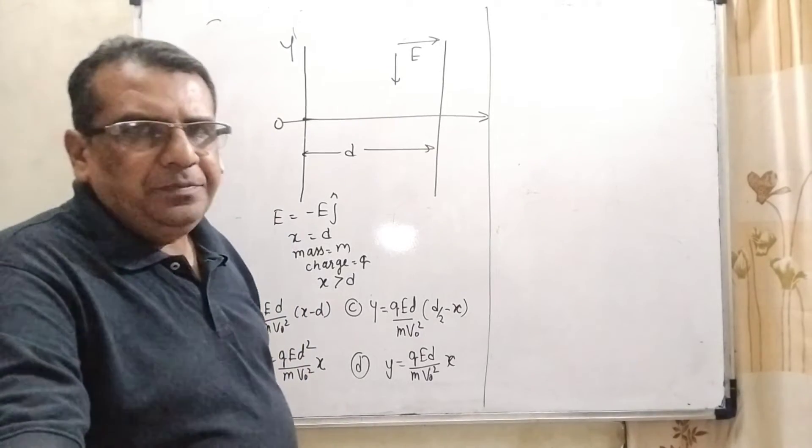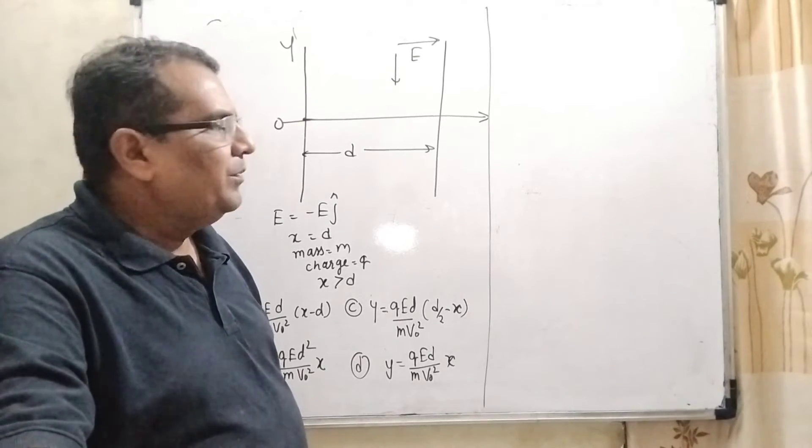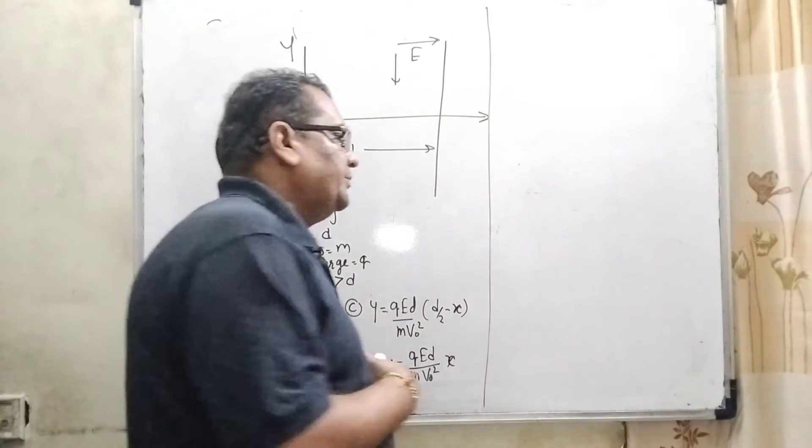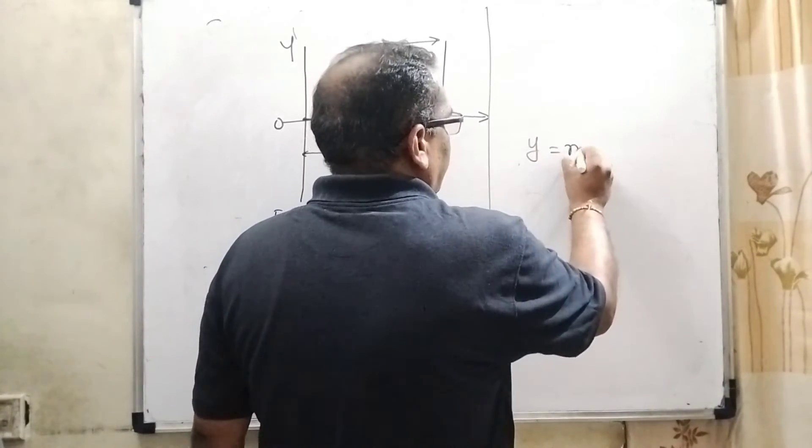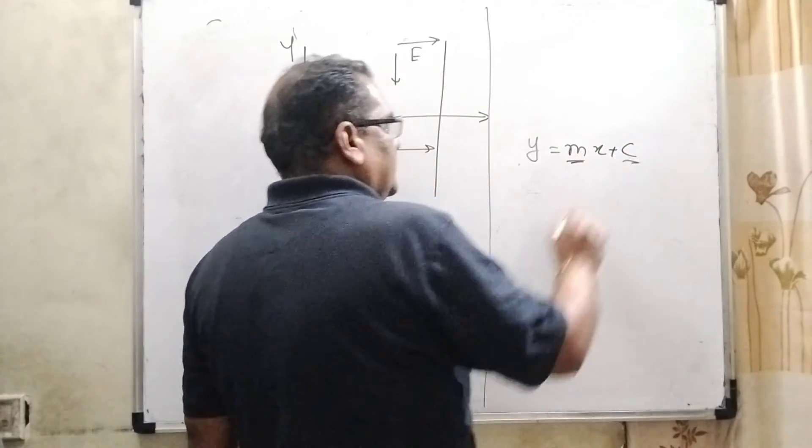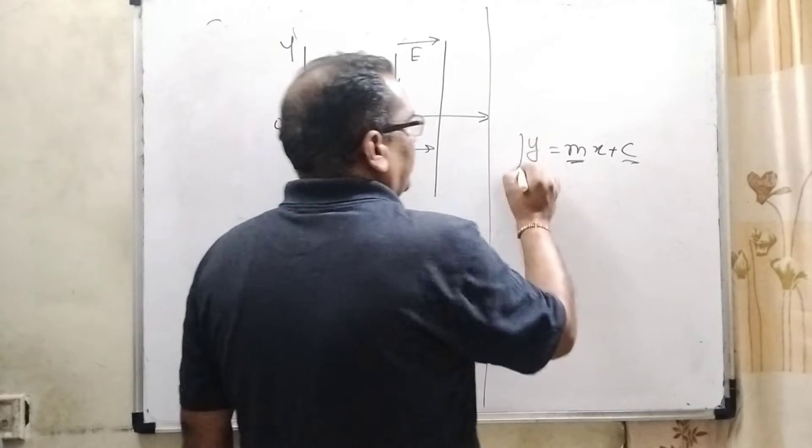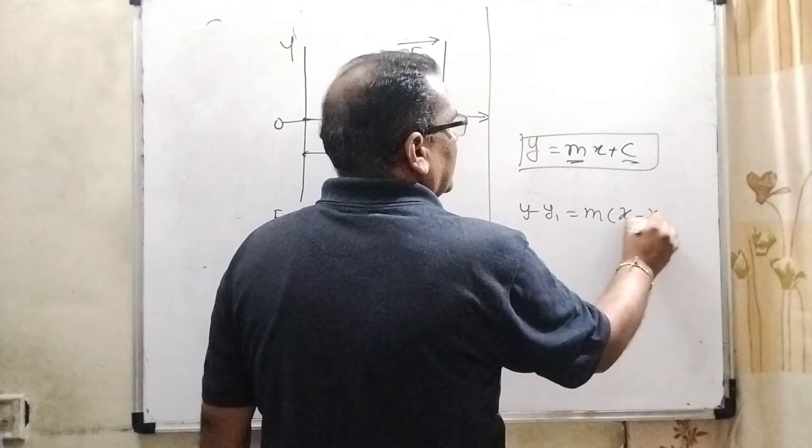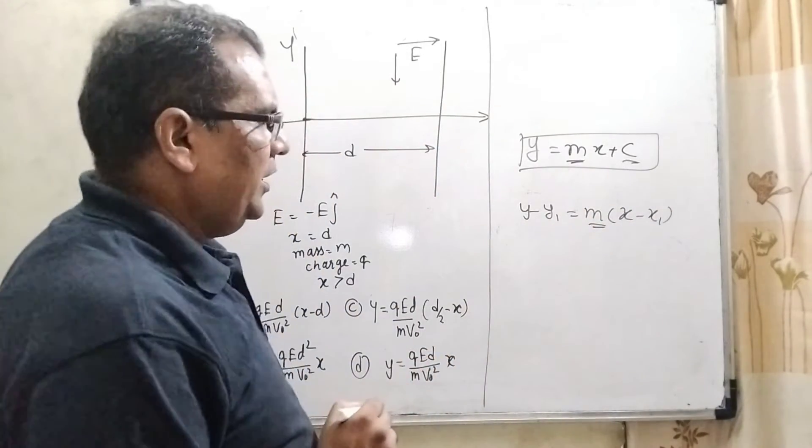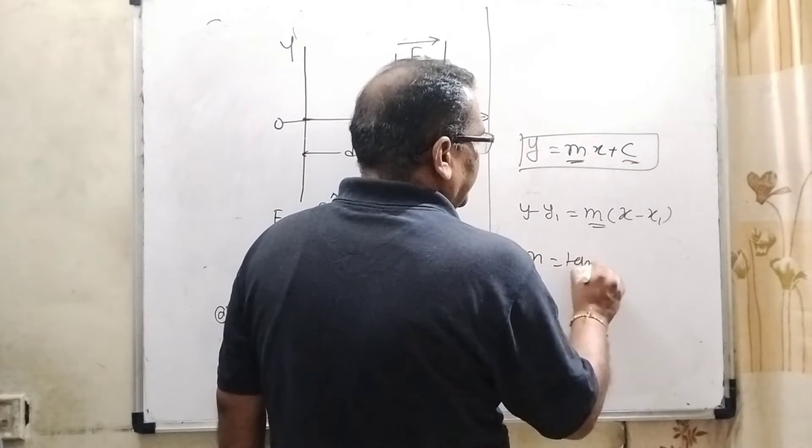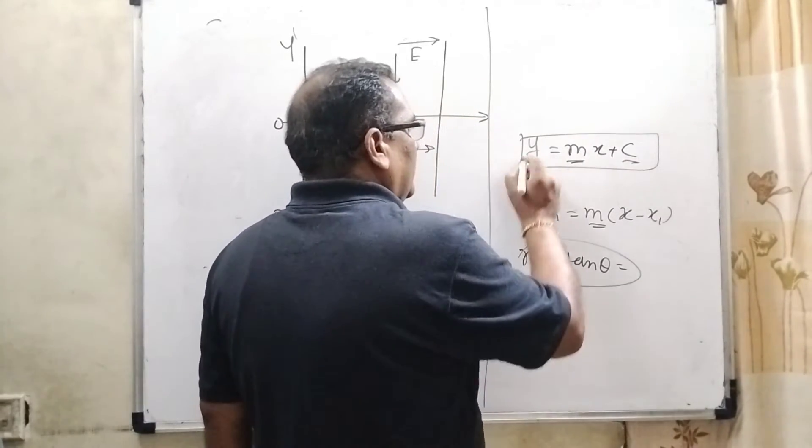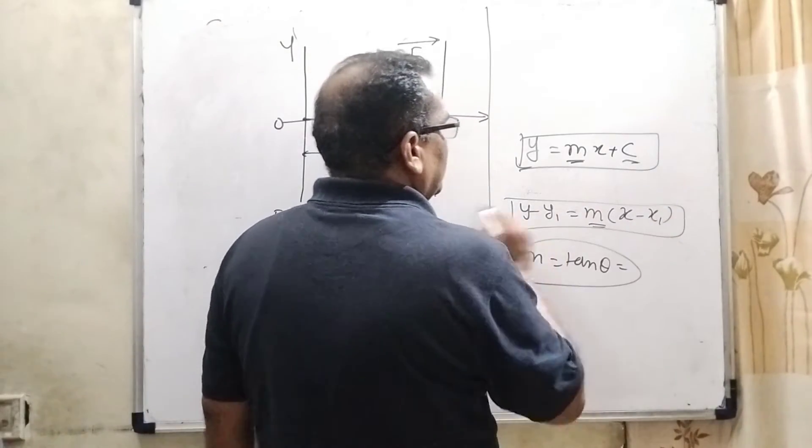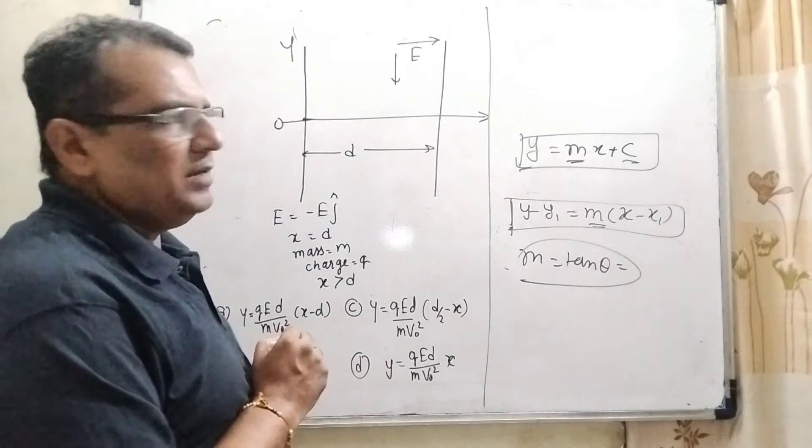This is a very interesting question based on mathematics and related to the straight line. We are very well known about the straight line equation, that is y = mx + c, where m is the gradient and c is the intercept. And another equation of the straight line: y minus y1 equal to m into x minus x1, where m is the gradient, or it can be written as m equal to tan theta. So therefore, we can use any one of the methods, but I prefer this method: y minus y1 equal to m into x minus x1.